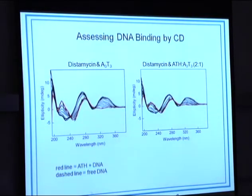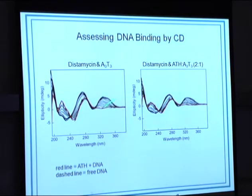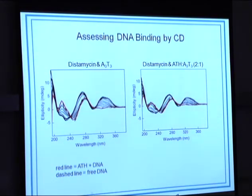Looking at the CD data piece by piece: the dashed line is just the DNA. When you put in the AT hook peptide, it overlays almost exactly — you can't tell the DNA is bound by the protein. We know it is from other experiments, but we can't see it by this technique. The AT hook binding does not change the structure of the DNA.